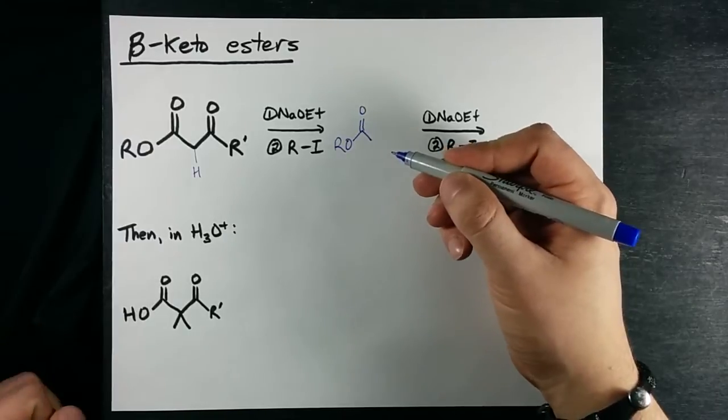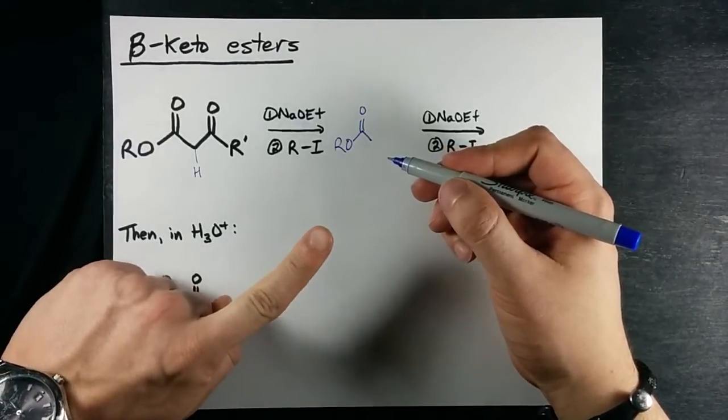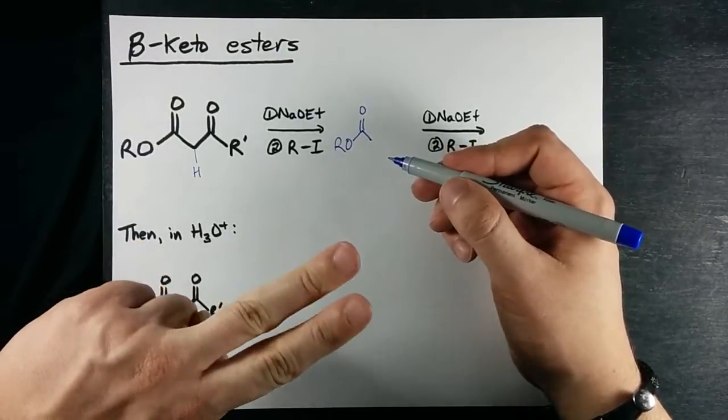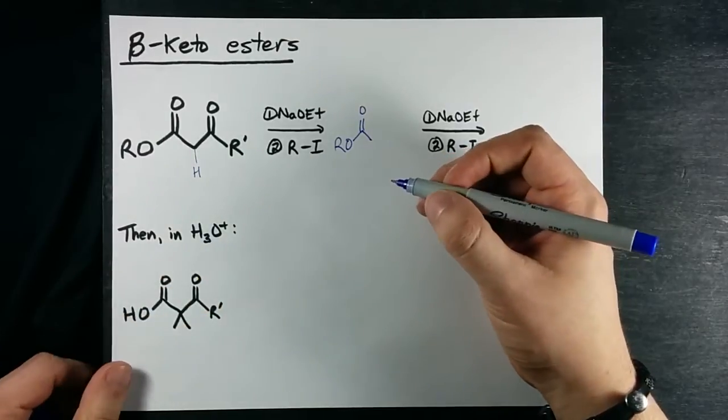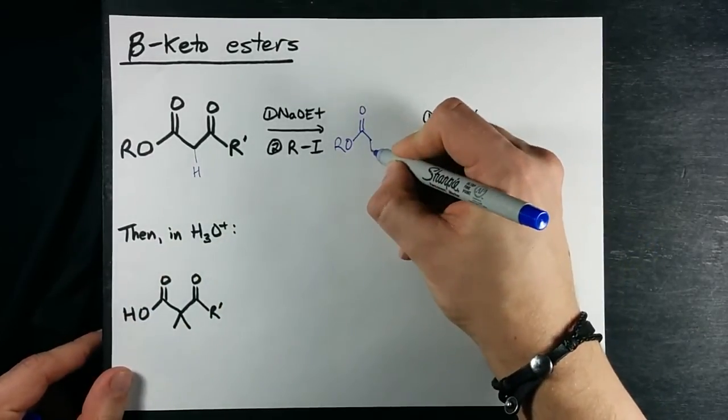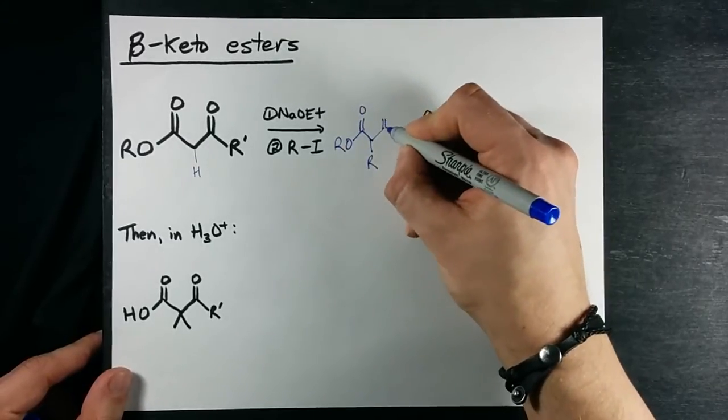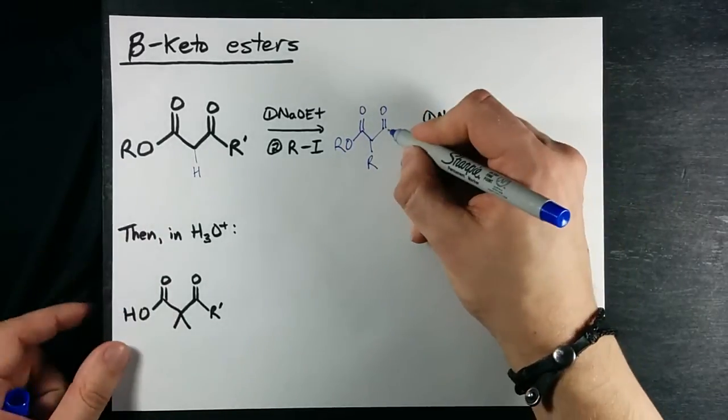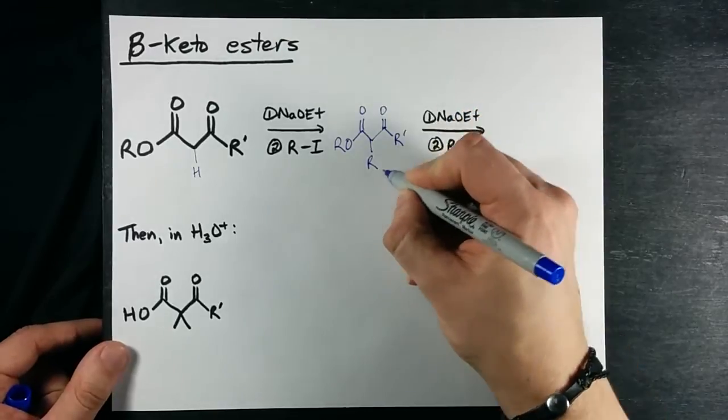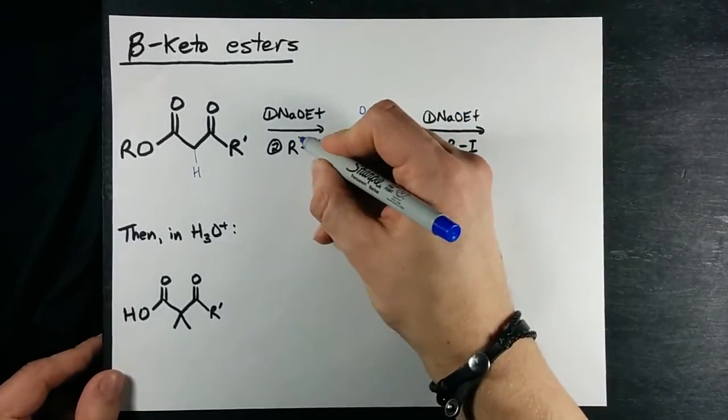So I'm going to attach—I shouldn't have called that R the same way I called that R, but whatever, it doesn't matter what kind of alkyl group it is. I guess I'll call it R prime. And because in this example there's still another alpha proton on that carbon, you can do the whole cycle again.